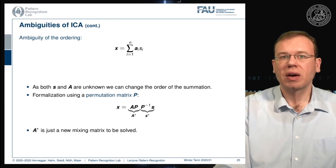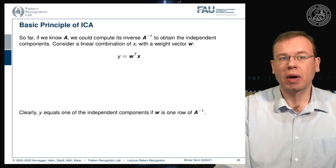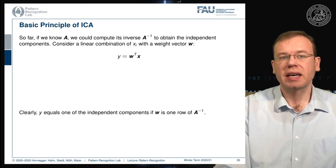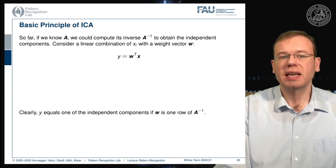If we know A, we can compute its inverse to obtain the independent components. If we consider a linear combination of xi with a weight vector w, we can express y as the inner product of w with x. Then y equals one of the independent components when w is one row of A-inverse.